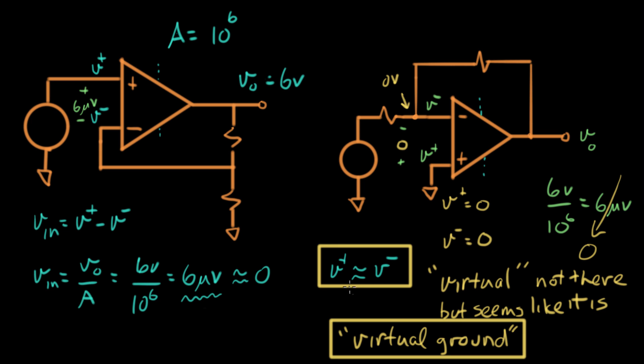So these two ideas say the same thing. Vplus equals Vminus is always the situation around the input to an op amp when it's running properly. And in the case particularly of this op amp configuration, where the plus terminal is connected to ground, we say that the other terminal, Vminus, is at a virtual ground or is a virtual ground.